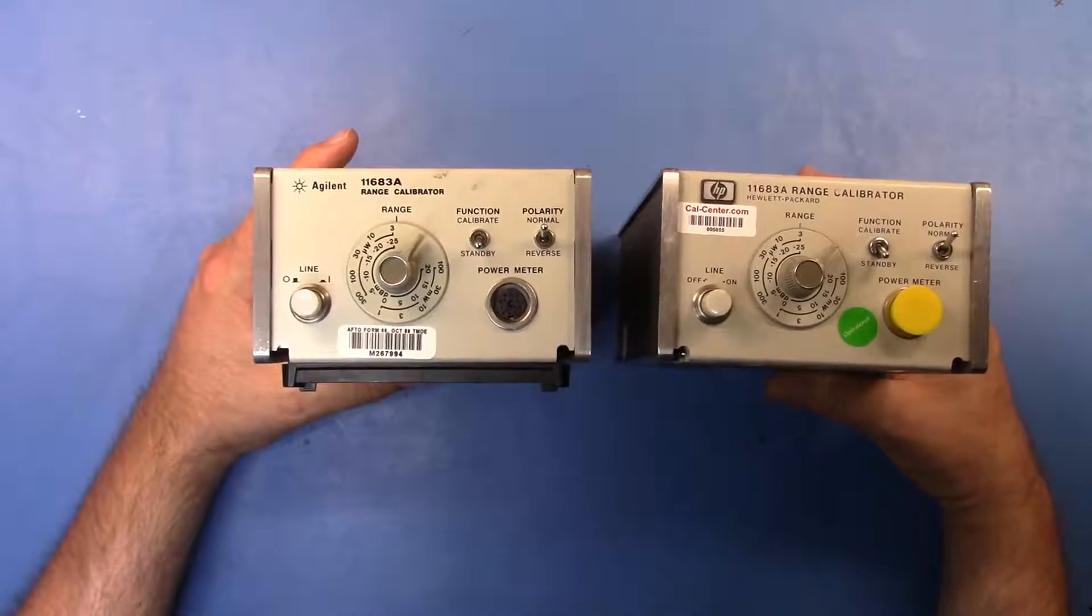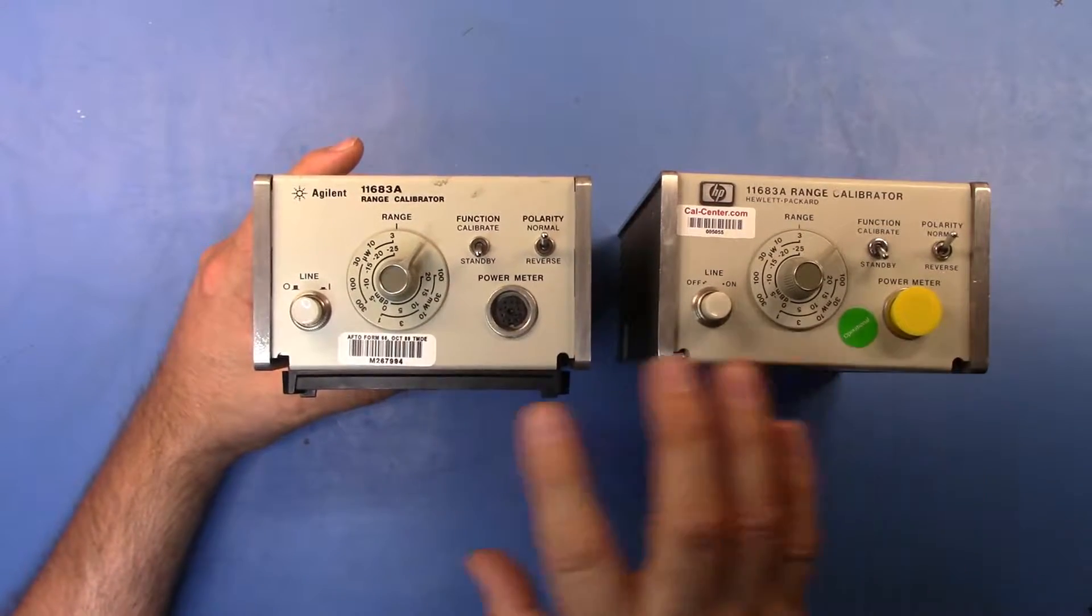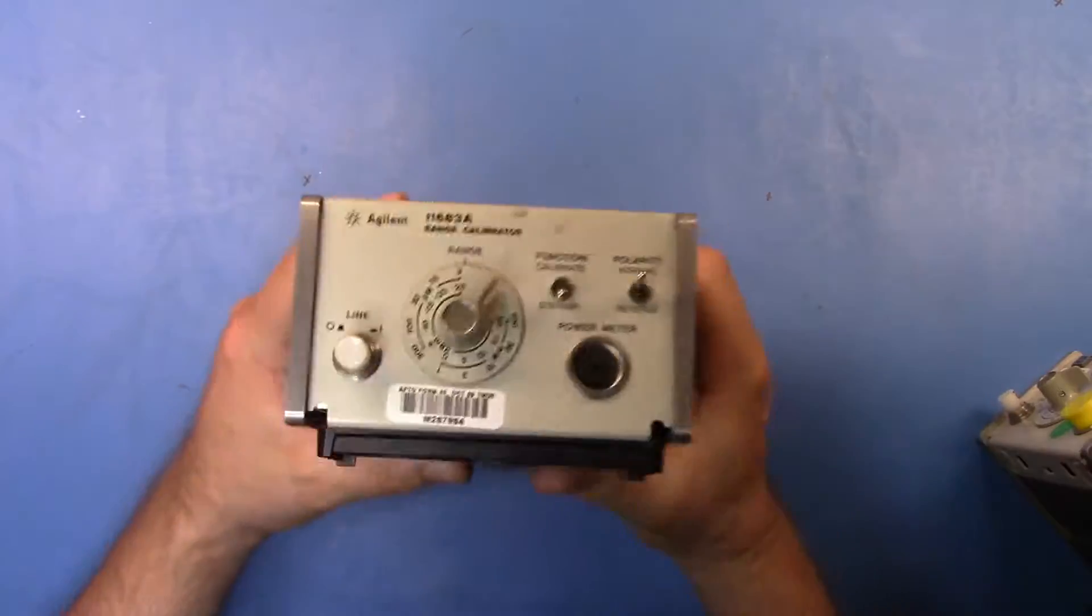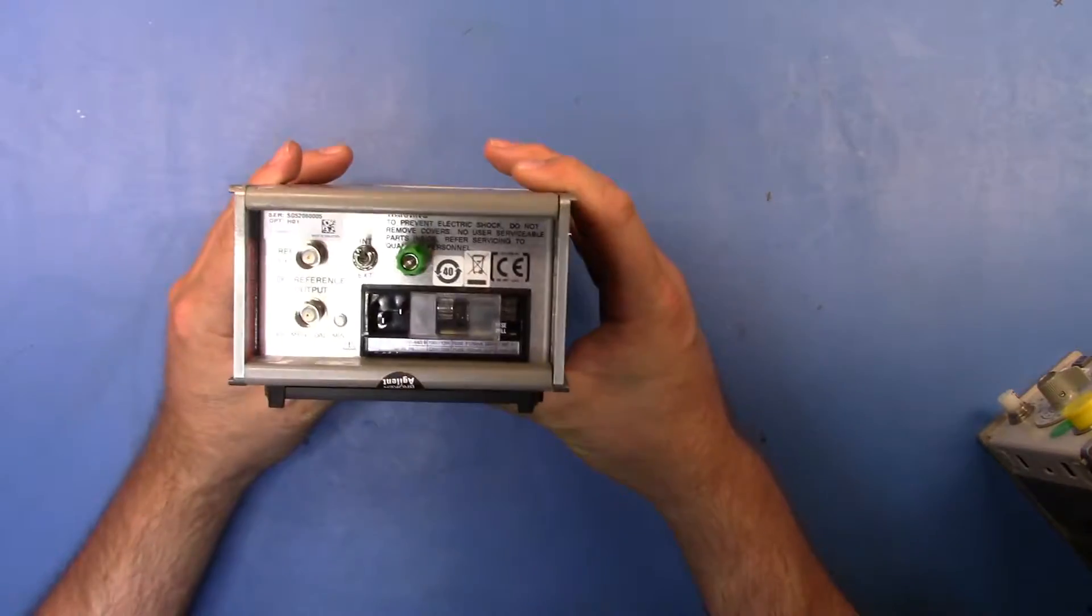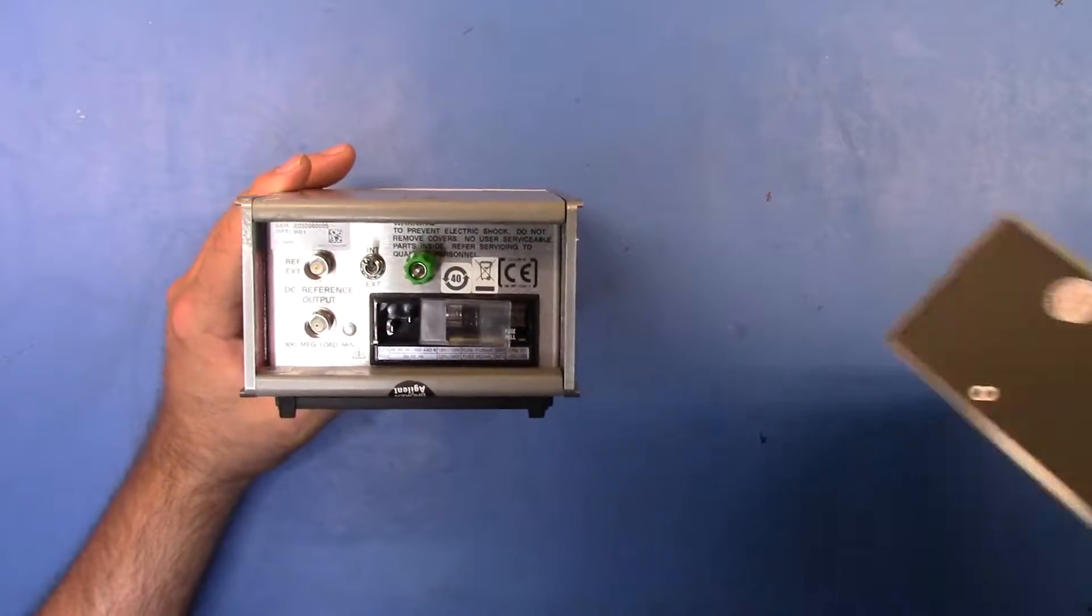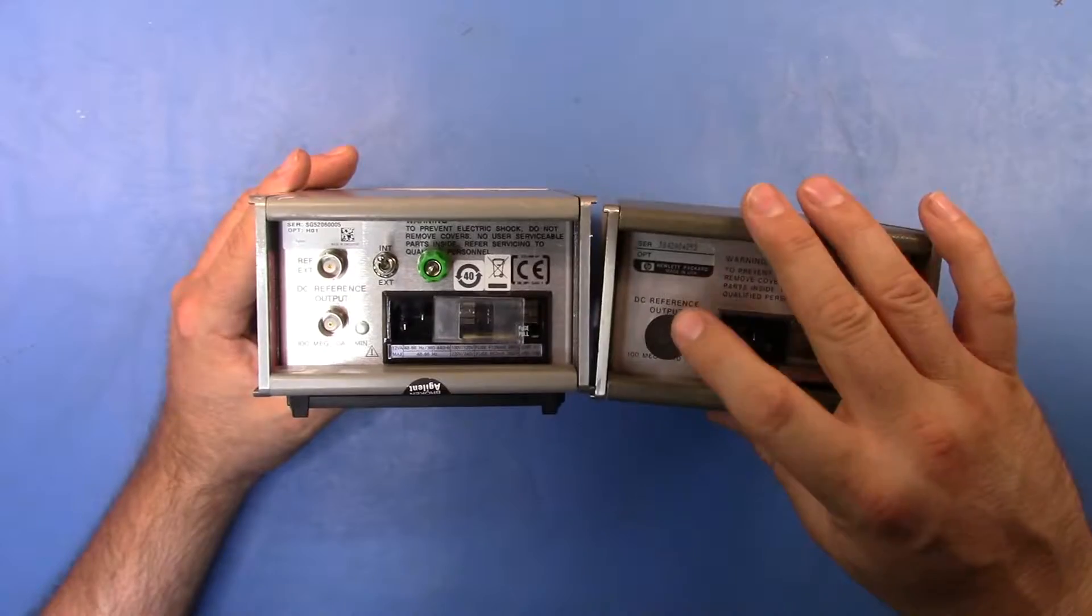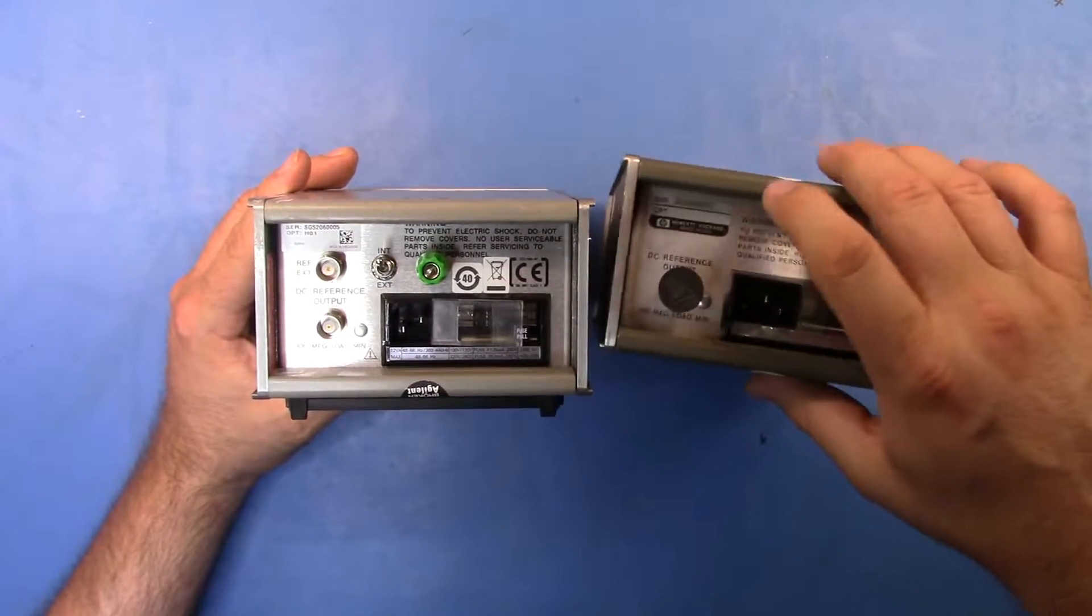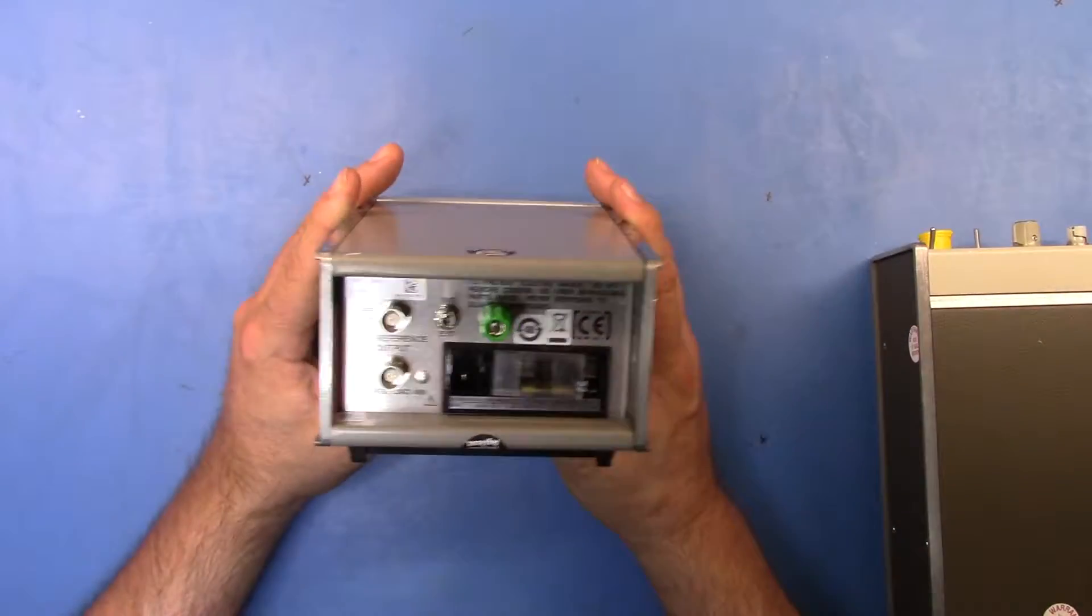The one that I've been previously using is branded Hewlett Packard, but it's fundamentally the exact same calibrator. So why did I invest in buying this calibrator from the Department of Defense? Well, the reason is on the back here. All we have is the DC reference out and we don't have any other componentry, but this guy here is the 11683 with option H01.